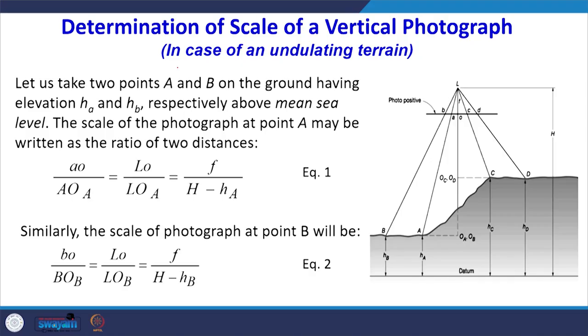This is simple when we assume flat ground, but in reality the ground has many undulations. We must consider the relief present in the area to determine the scale. For an undulating terrain, we have a ground profile with four points A, B, C, and D, where C and D are at a higher altitude and A and B are at a lower altitude. L is the exposure station for one photograph.